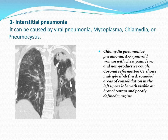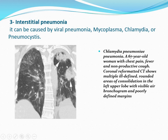Interstitial pneumonia can be caused by viral pneumonia, mycoplasma, chlamydia, or pneumocystis. Coronal CT shows multiple ill-defined round areas of consolidation in the left upper lobe with visible air bronchogram and poorly defined margins. In this case it was chlamydia pneumonia. One of the differentials is Pneumocystis jirovecii (formerly carinii), which is one of the AIDS-defining pathologies, so we should ask the patient to do HIV testing.